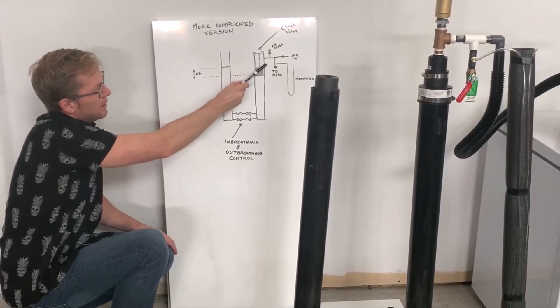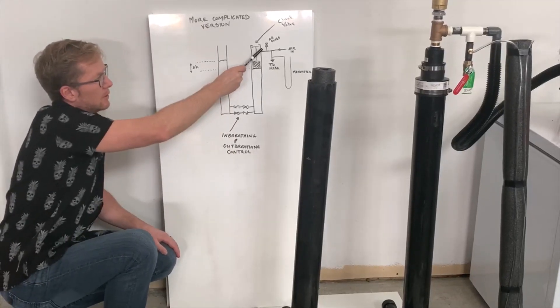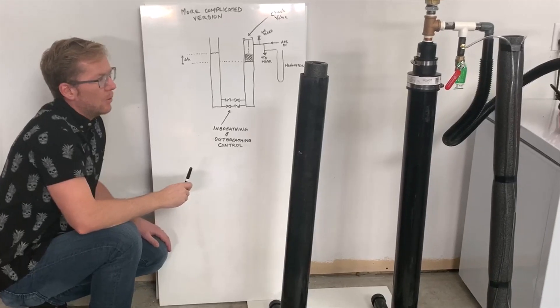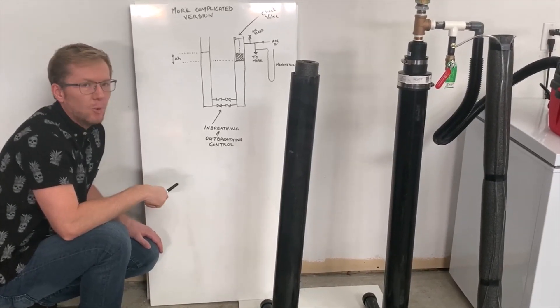We also added an air bleed as we're using a shop vac for the pressure source. This allows us to adjust the inlet pressure to the tubes. Now I will take apart the machine and show you a little bit more about how it works.